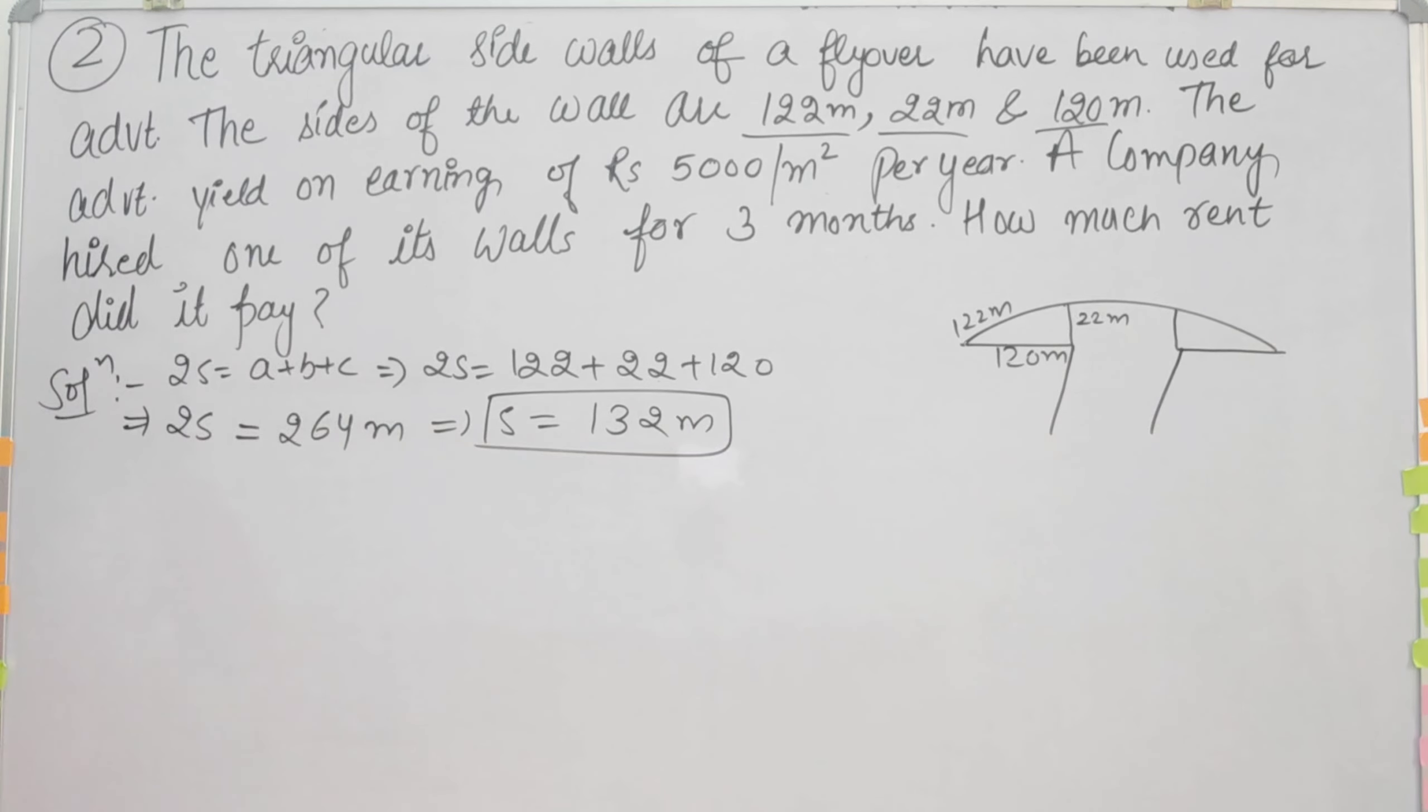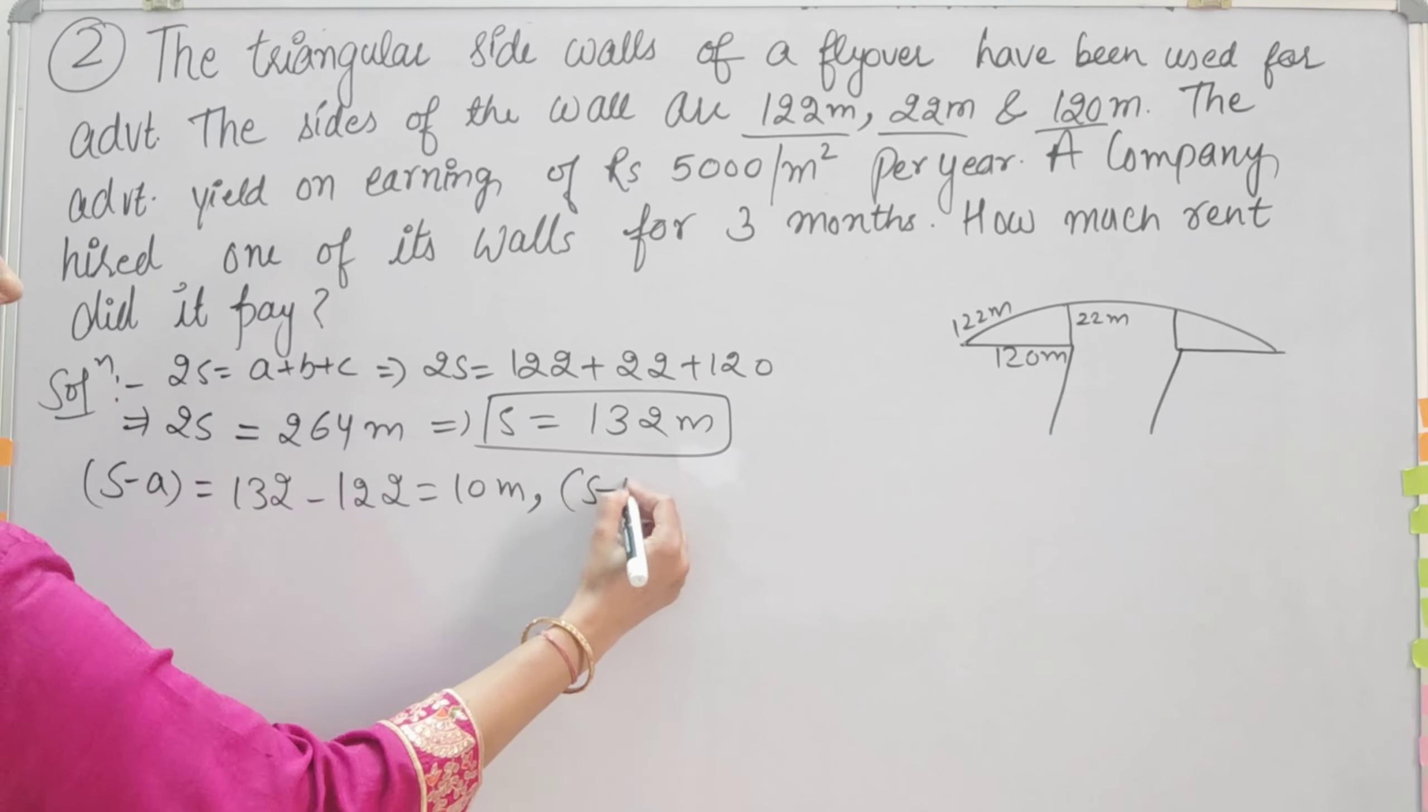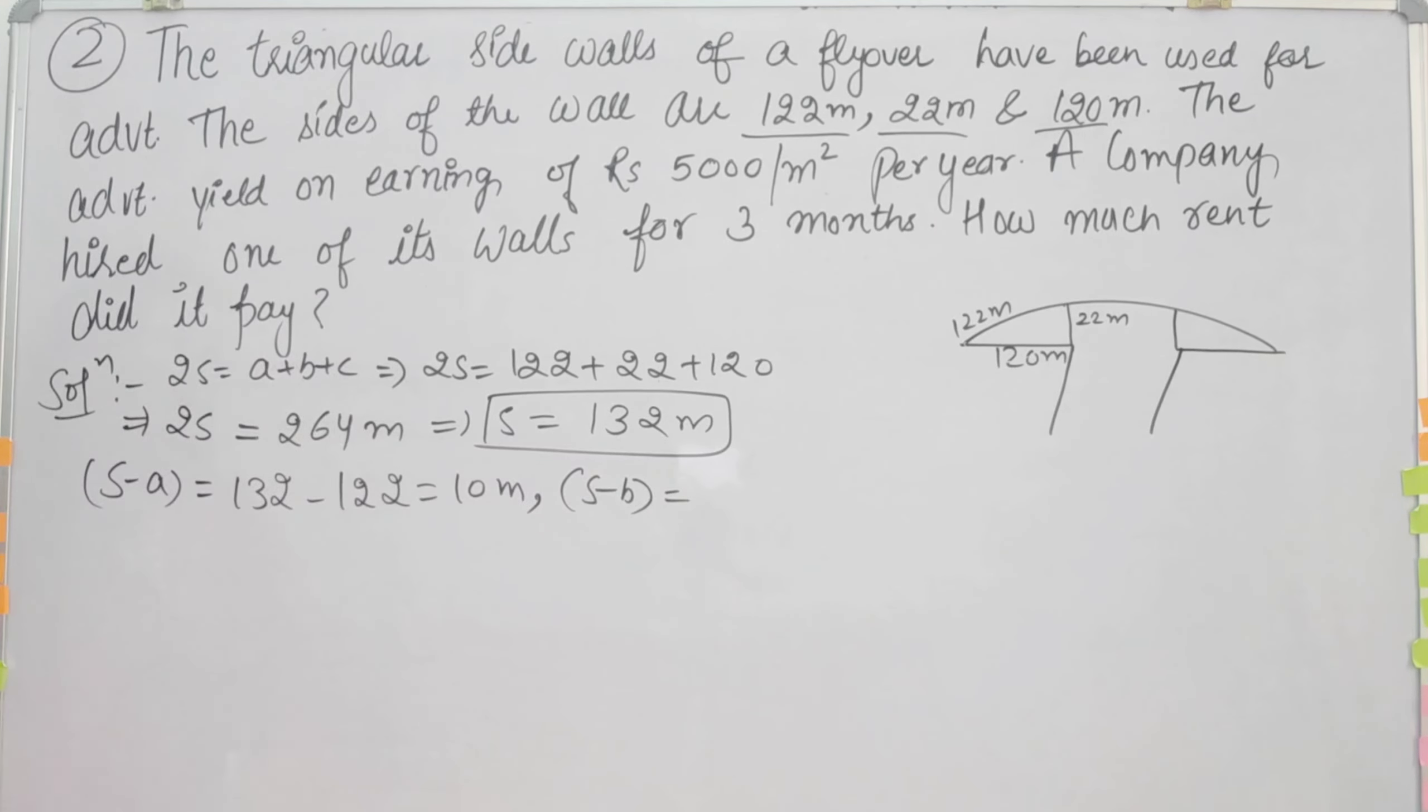How much area of the triangle do we have to find out? We can find s is equal to 132. Then s minus a, which is 132 minus 122, which equals 10 meters.